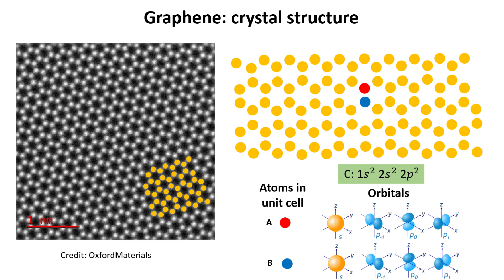This totals eight orbitals per unit cell in our model. Hence the Hamiltonian for electrons in graphene is an eight-by-eight matrix, with two sublattices plus four orbital degrees of freedom. We examine the Hamiltonian shape in the next slides.